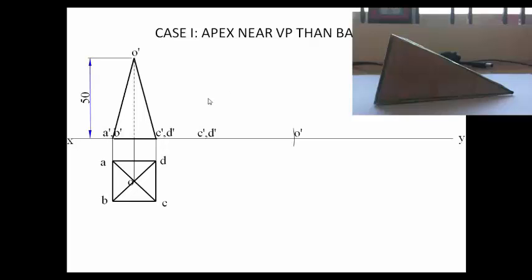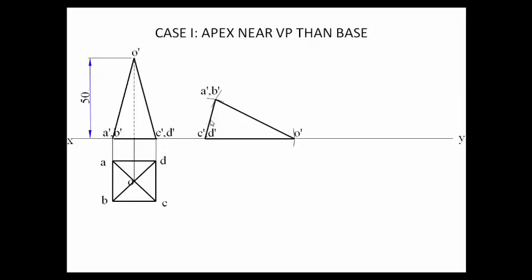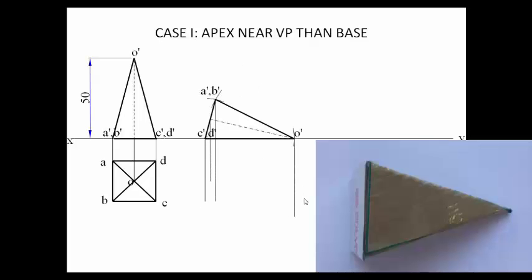To locate a-dash and b-dash, keep one leg of the compass at the known point and the other at a-dash b-dash from step 1, then strike an arc. Repeat with the other center to intersect and find a-dash b-dash. After darkening the step 1 pattern again in step 2, we draw projector lines from the top view of step 1 to the right to build the new top view.